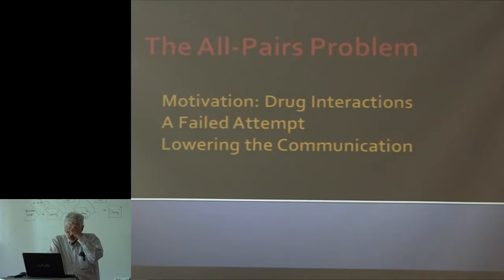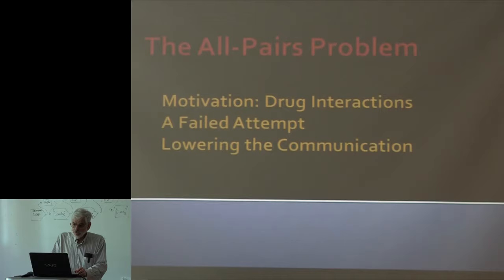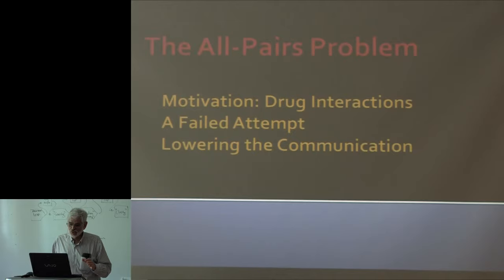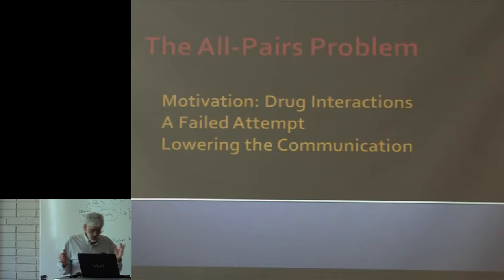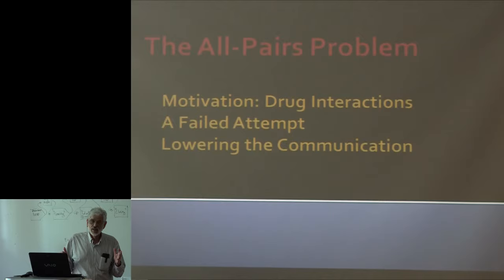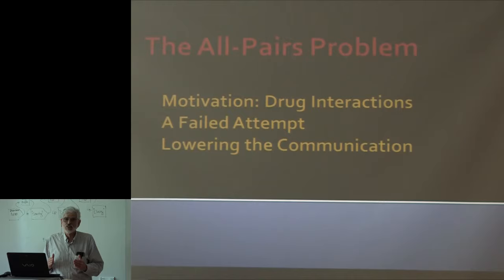The all-pairs problem actually came up in a project I was supervising in our data mining course, where students proposed finding drug interactions. They had records for about 3,000 drugs that were administered frequently enough to make statistically significant observations. The data came from Stanford Hospital — information about about a million patients over 20 years: what diagnoses were made, what medications they were given. They were running their MapReduce algorithm and the job was running and running. The midterm reports were due, and nothing was happening. They got in touch with me and we talked about what they were doing — and it turned out they were doing something very natural which was a disaster, but had an easy fix.